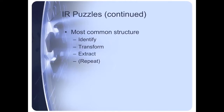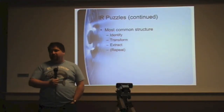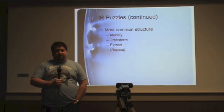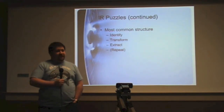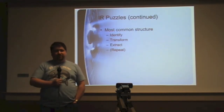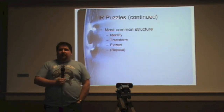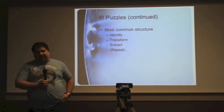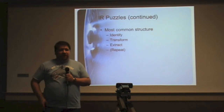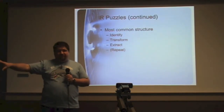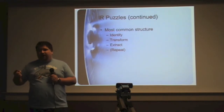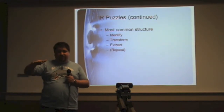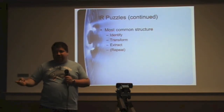The most common structure we see in an information reduction puzzle — and there are many other ways they can shake out — is that first you have to figure something out about the pile of data: identify it, maybe identify pictures you've been given, or figure out answers to particular sets of crossword-style clues. Transform usually takes the form of matching things up, maybe generating derivative data. And then finally, somehow you get from one information step to another to an extracted final answer.